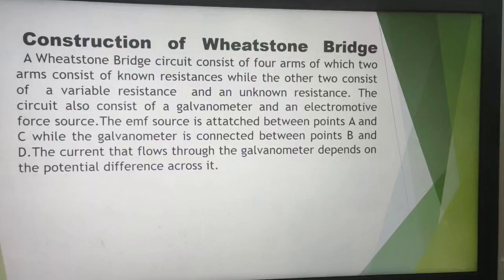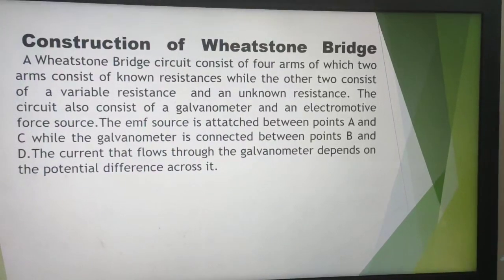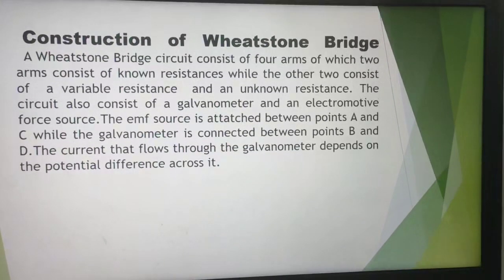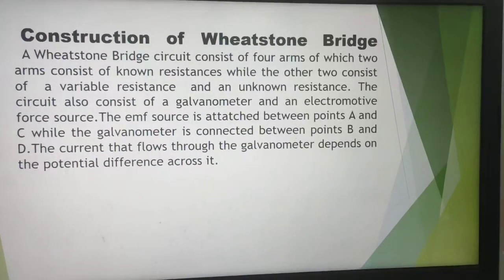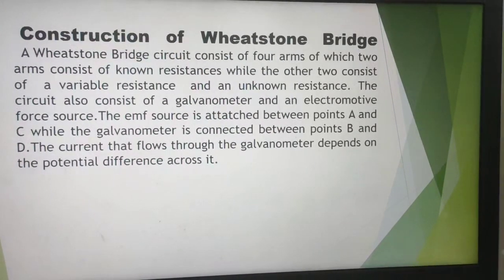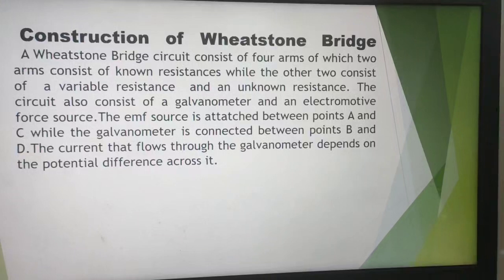Construction of Wheatstone Bridge: A Wheatstone Bridge circuit consists of four arms, of which two arms consist of known resistance, while the other two consist of a variable resistance and an unknown resistance. The circuit also consists of a galvanometer and an electromotive force source.